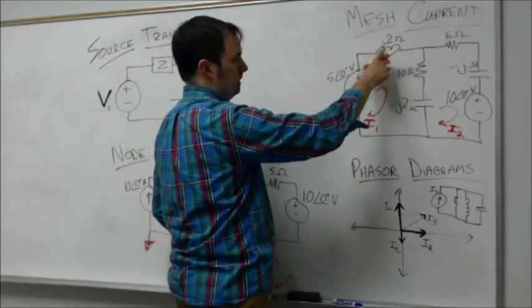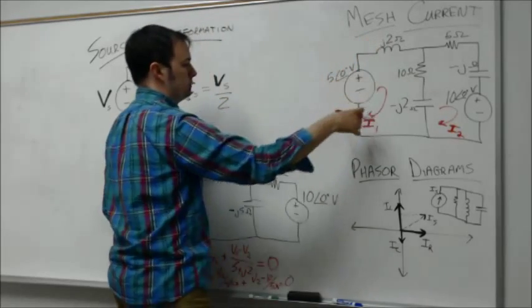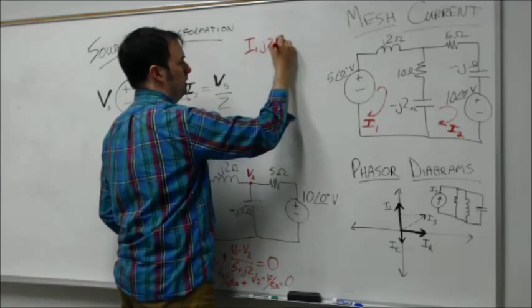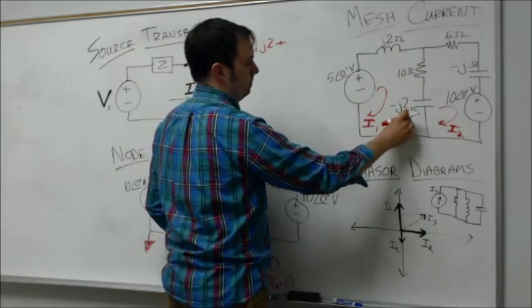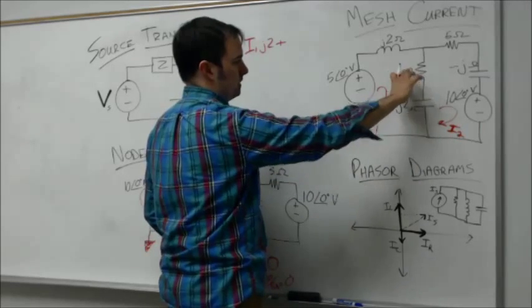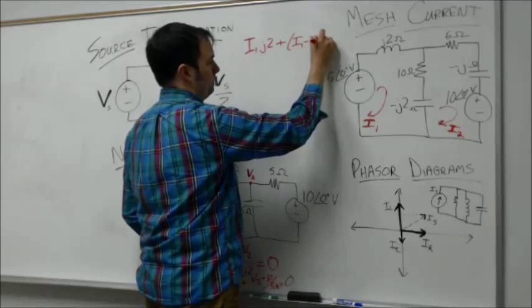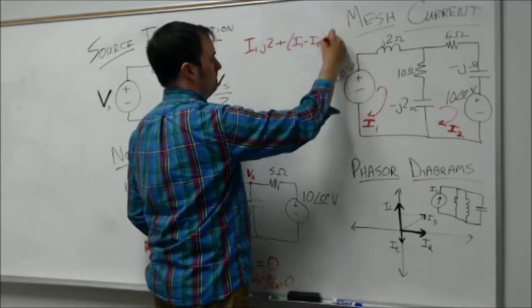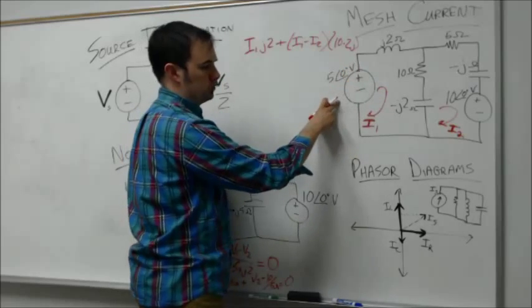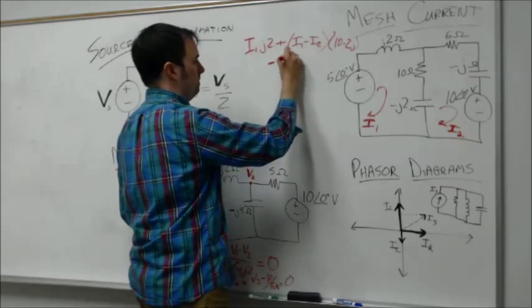For the voltage drop across each element, across the inductor we have impedance j2 times i1, plus the voltage drop across the middle branch i1 minus i2 times the combined impedance of the resistor and capacitor, 10 minus 2j. Coming into the negative terminal of the voltage source, that's a voltage rise, minus 5 volts, all equal to zero.